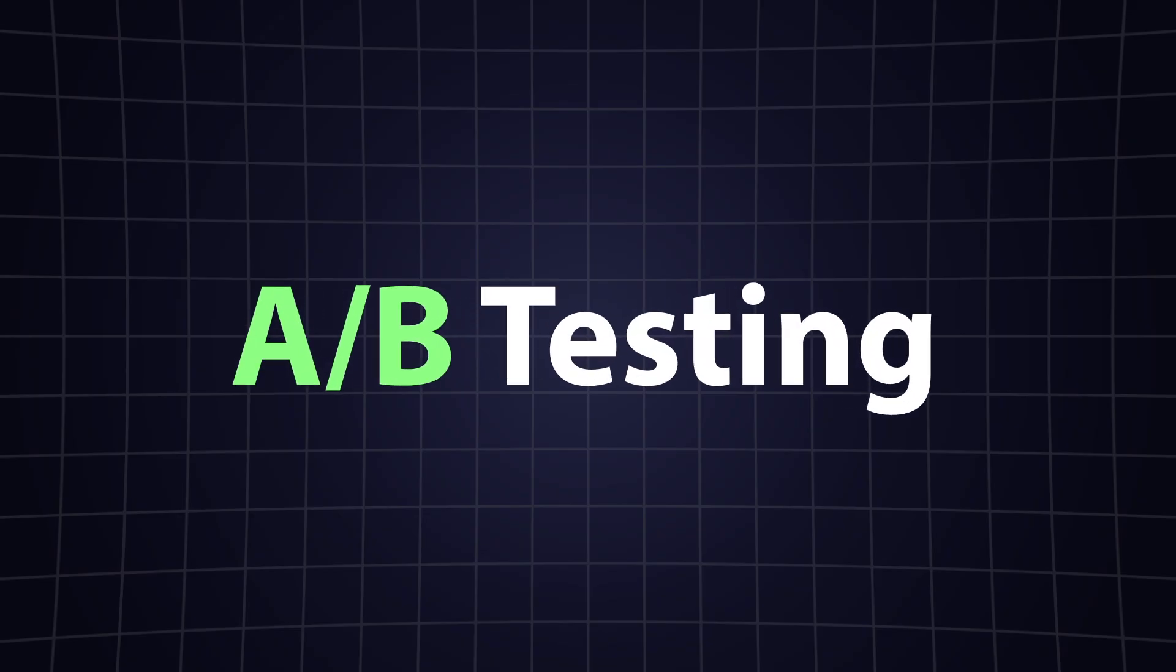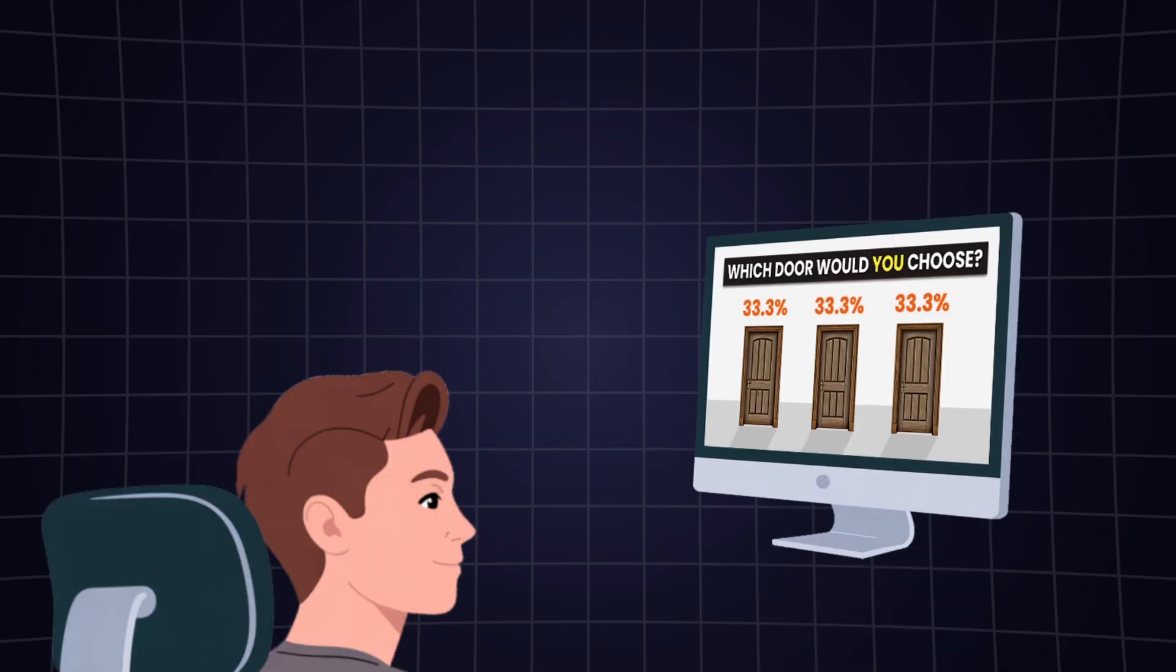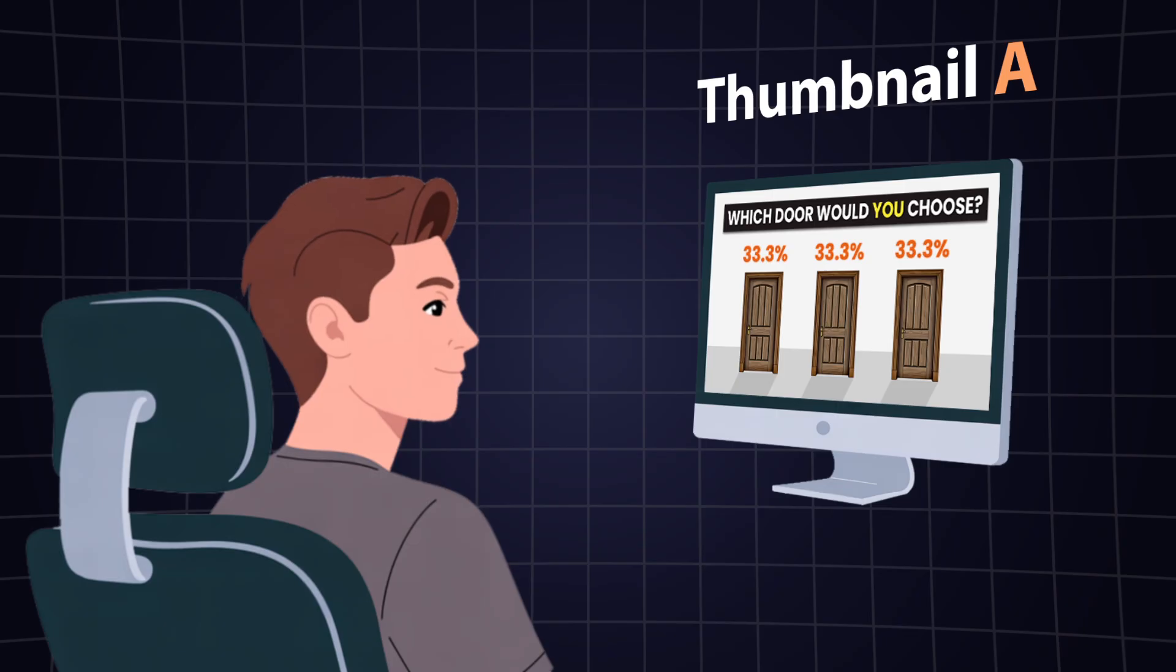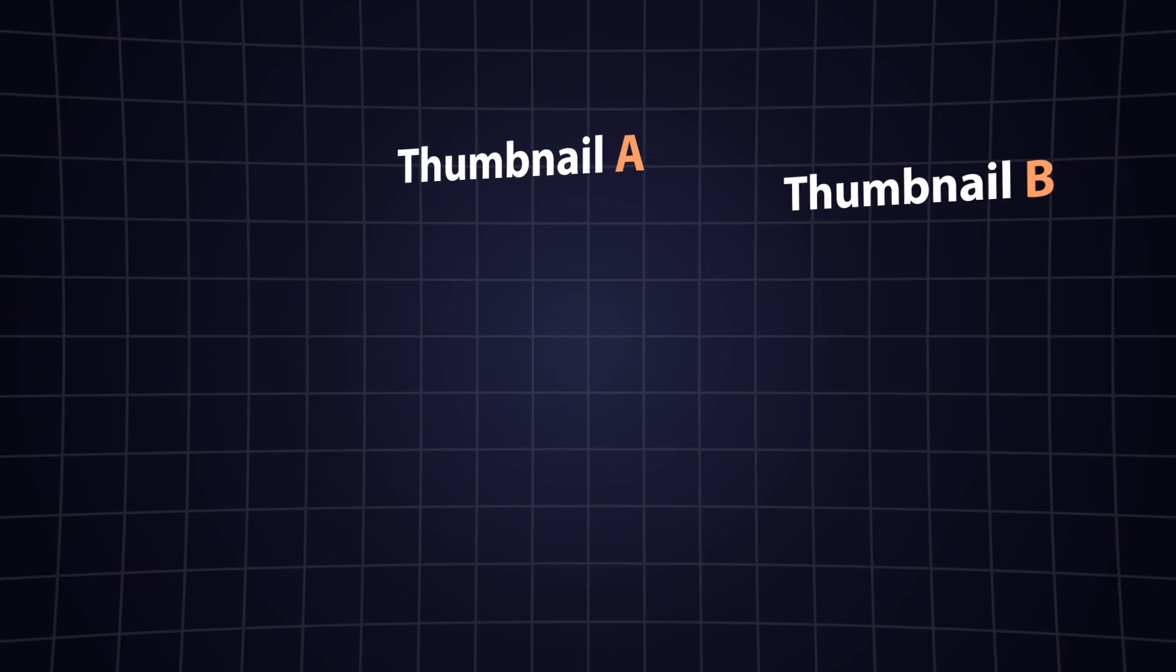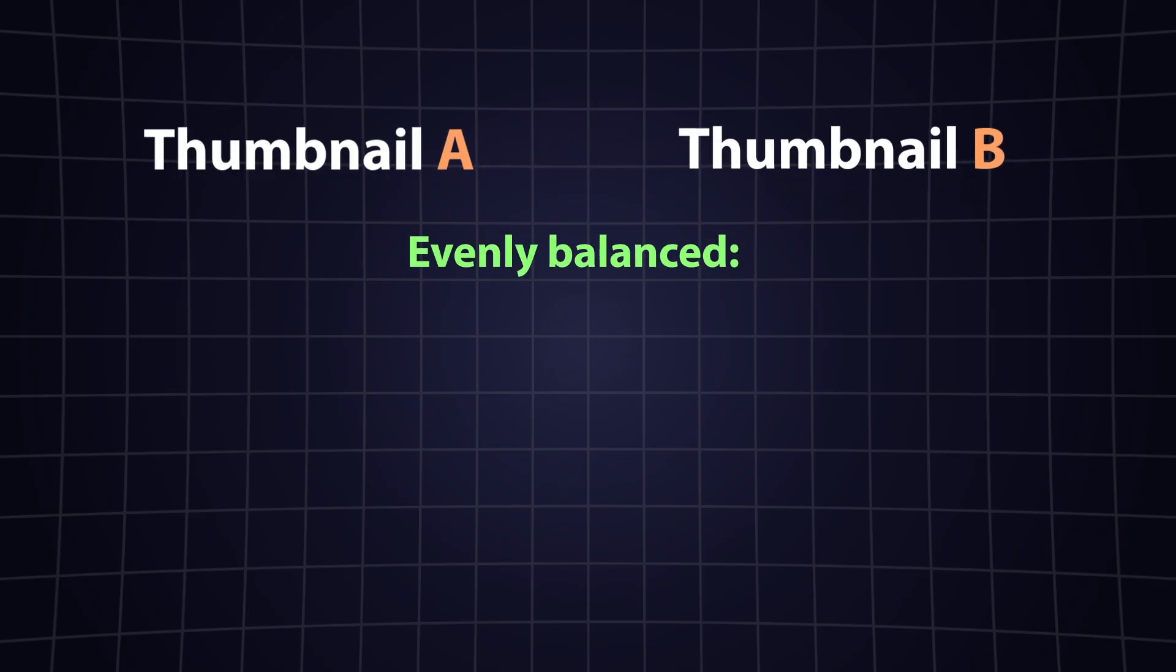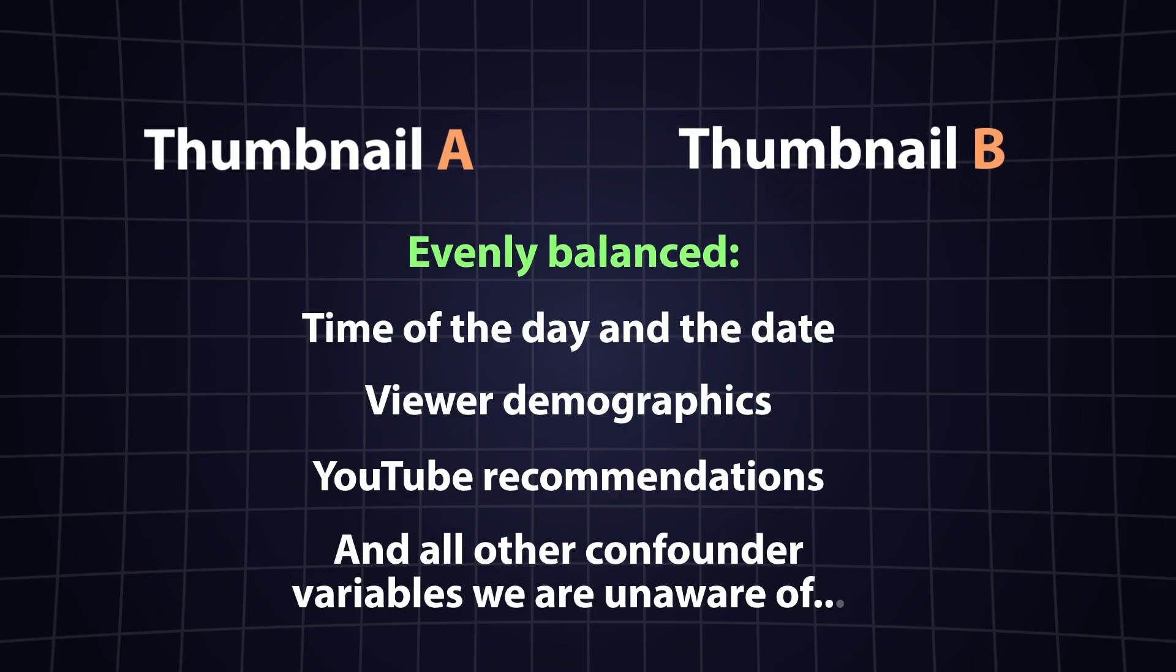A better way to measure causation is to run an A-B test. That means I would randomly show thumbnail A to half of my audience, and thumbnail B to the other half at the same time. By randomizing who sees which thumbnail, we make sure that other factors, like time of day, seasonality,